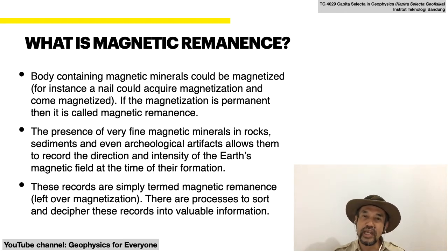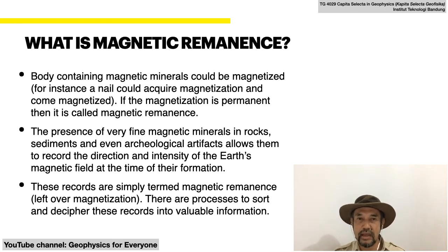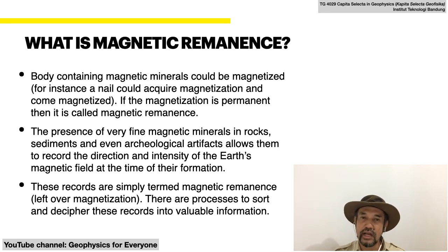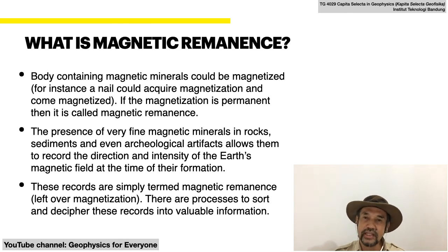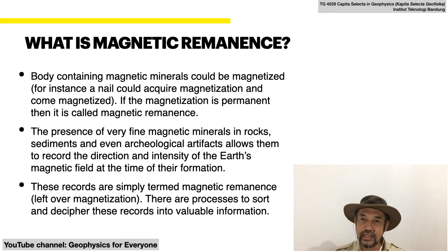A body that contains magnetic minerals could be magnetized. A simple example is a nail that becomes magnetized because it is rubbed by a permanent magnet. Thus, the magnetized nail is said to have a magnetization. If the magnetization is permanent, then it is called magnetic remanence.